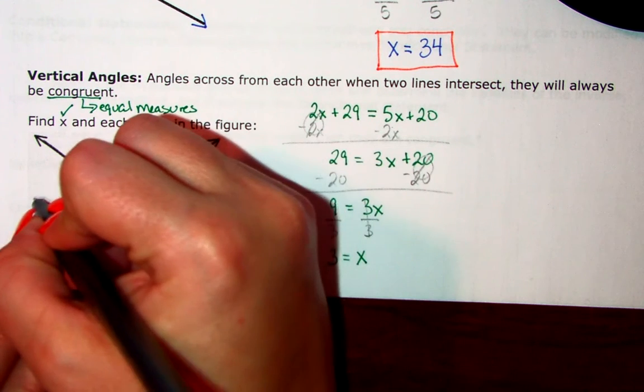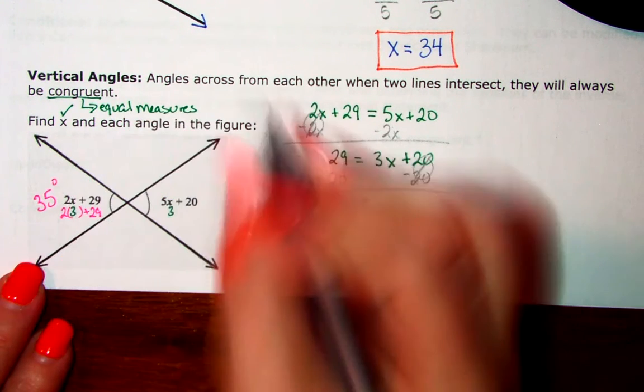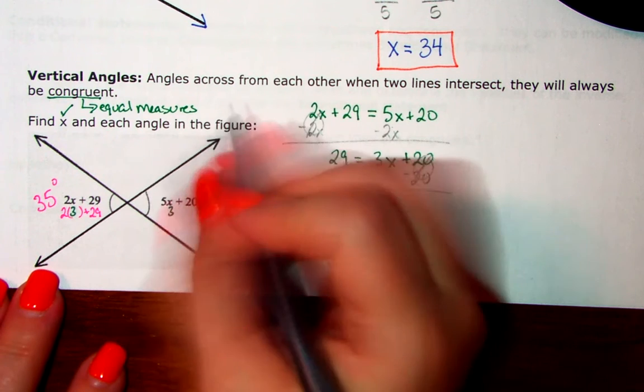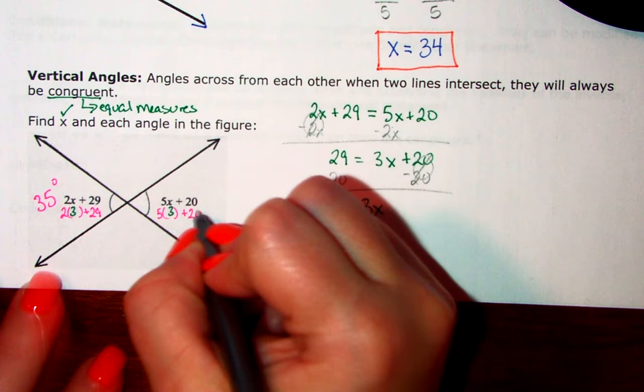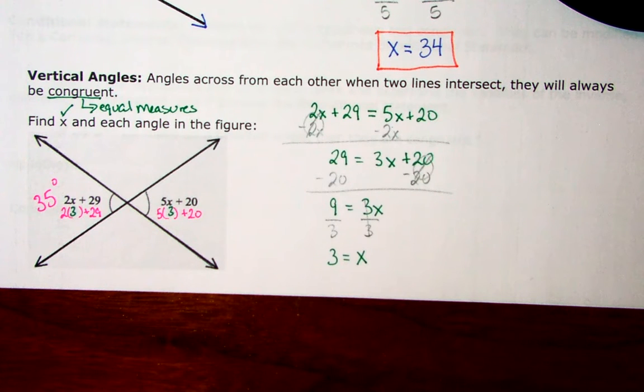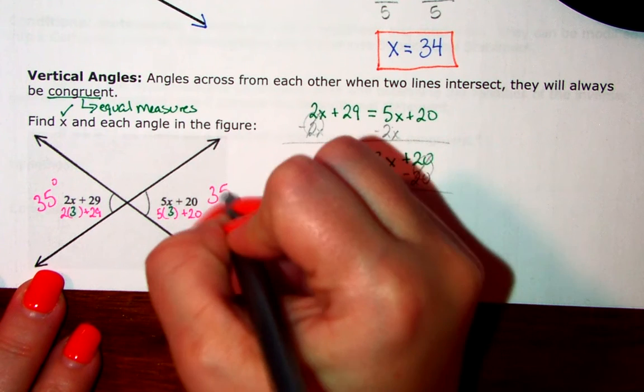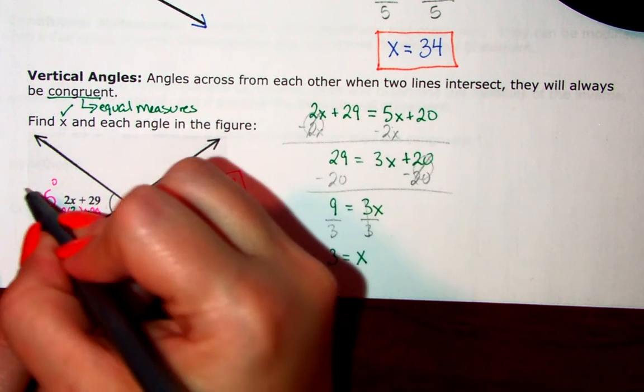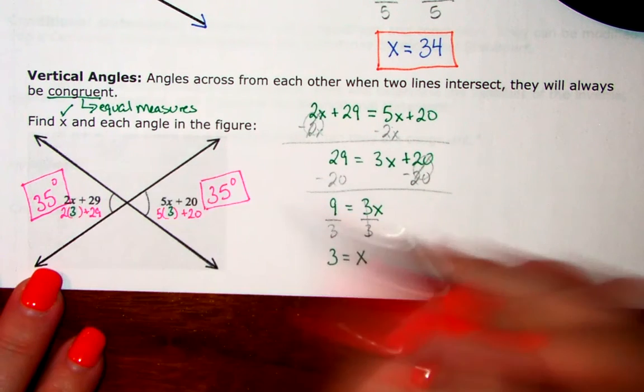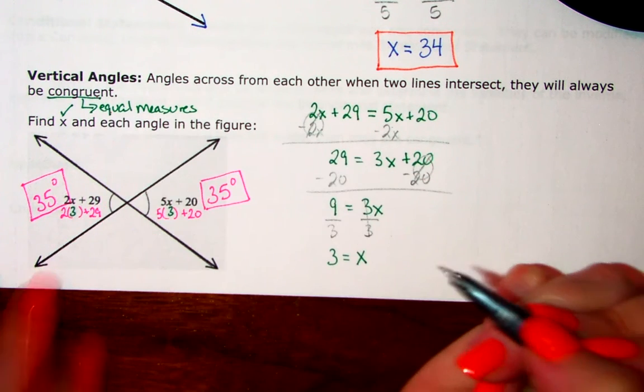So, this angle here is 35 degrees. We should get the same thing over here. When I do 5 times 3 plus 20, 5 times 3 is 15, and 15 plus 20 is also 35. So, we got them both equal, which is what we said we should because they're vertical angles, so they should be congruent, which means they should have equal measures.